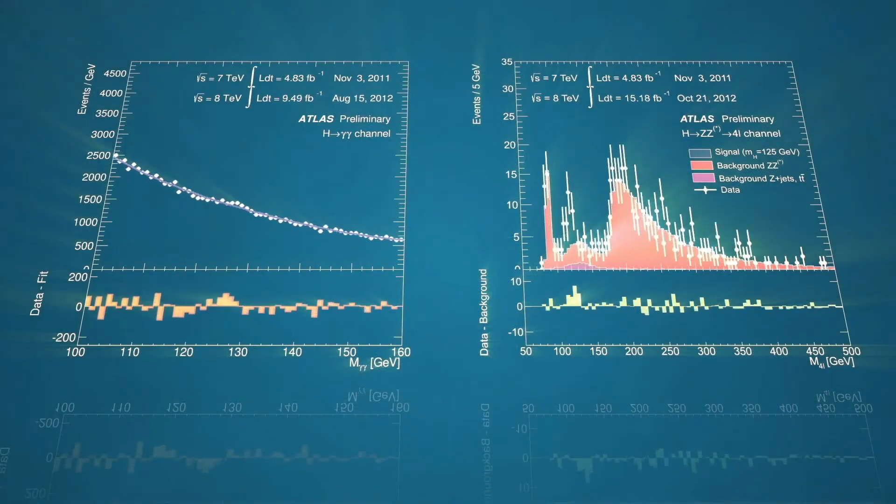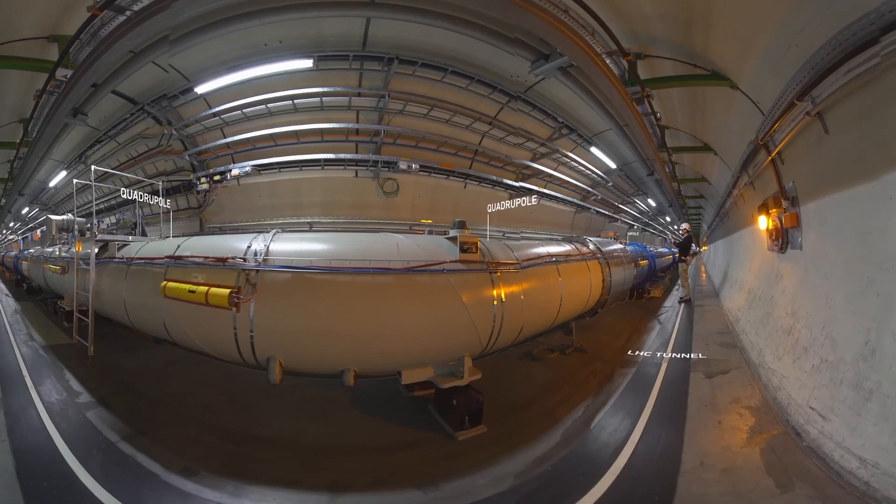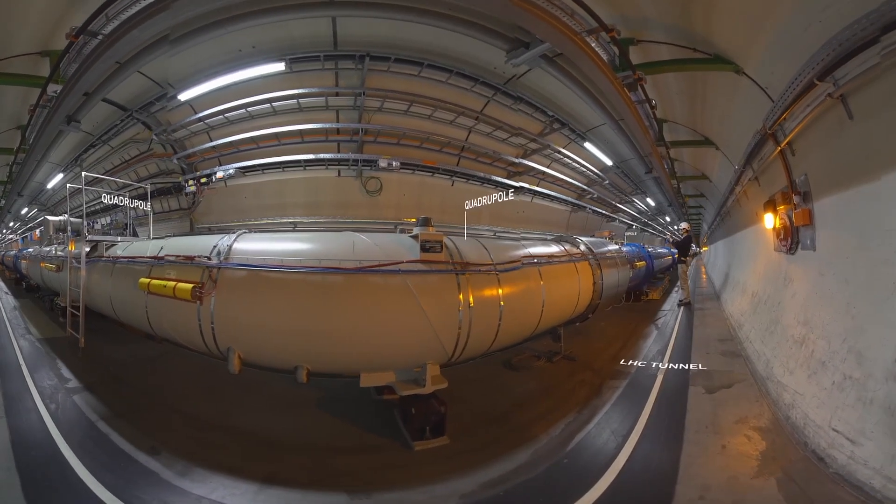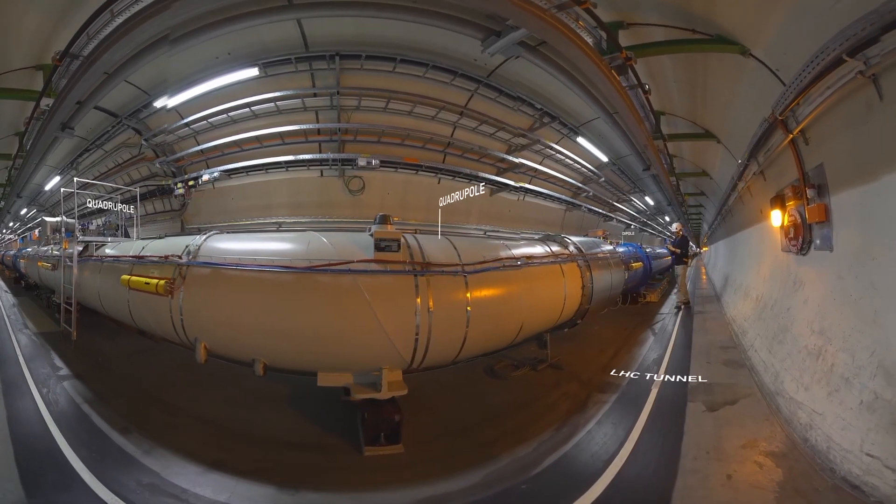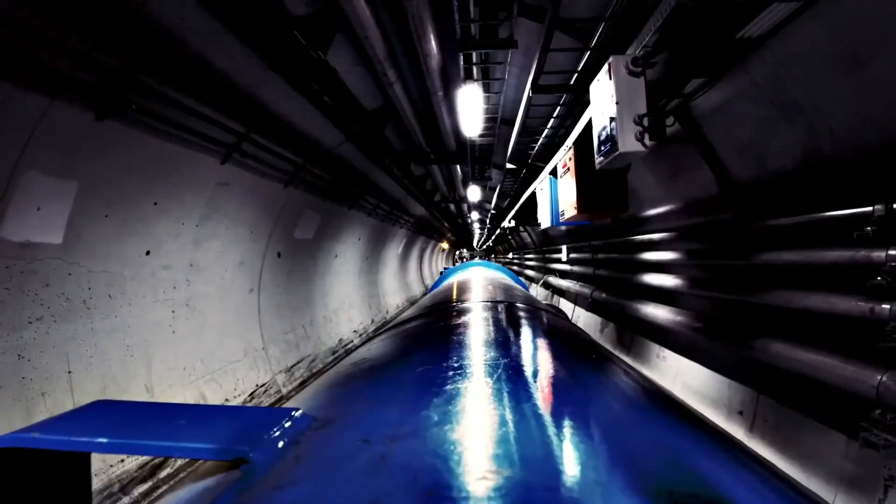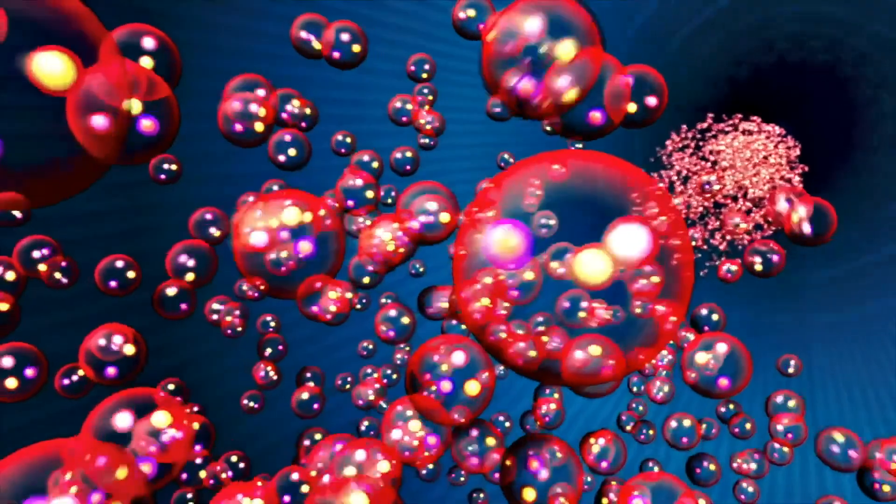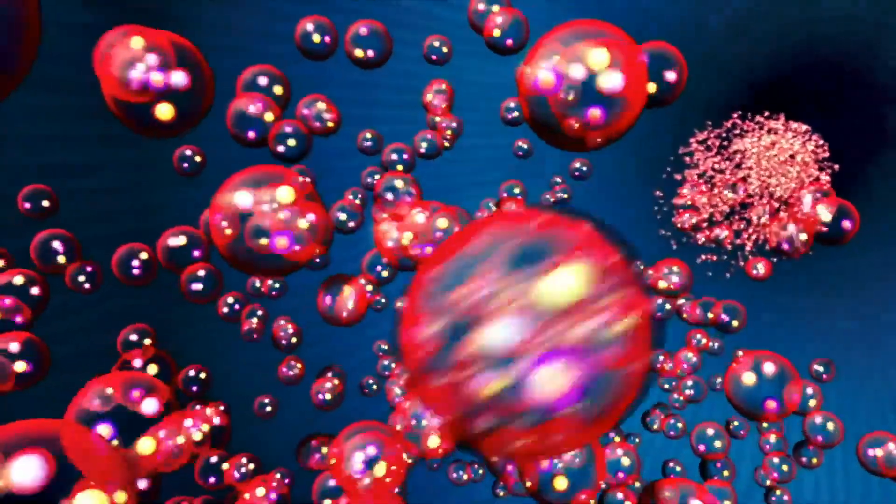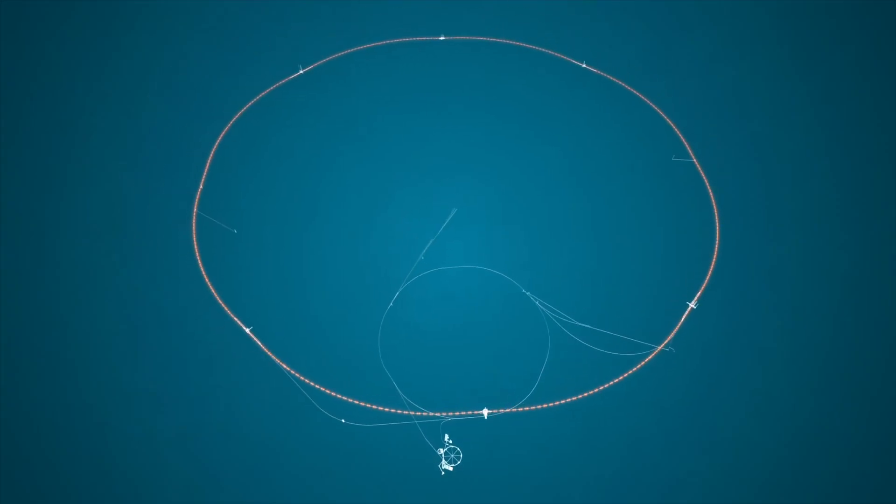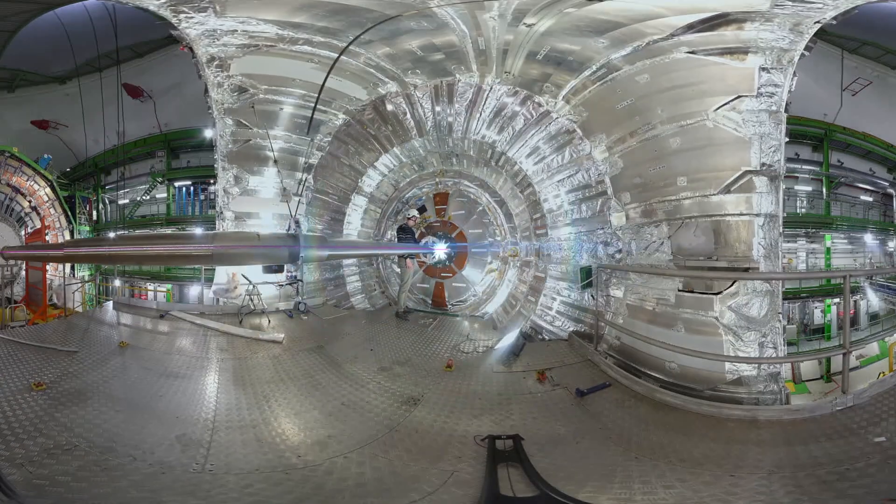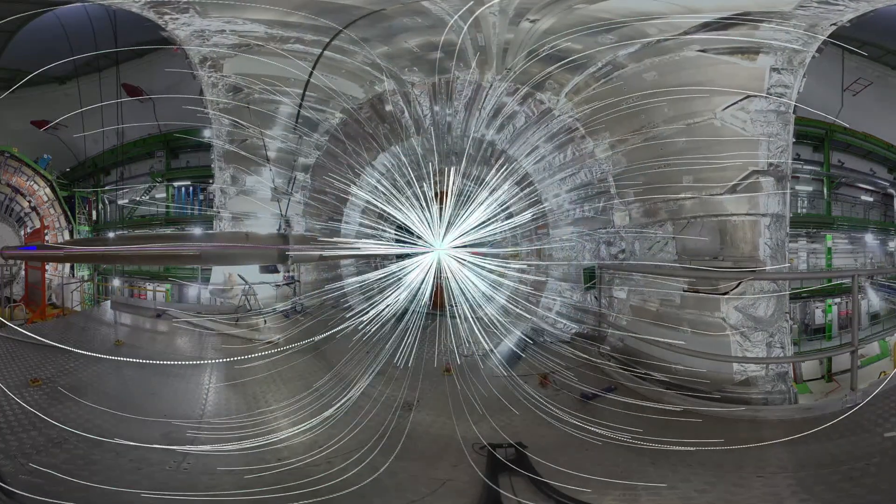This allows scientists to peer into the subatomic world and study the interactions of the particles as they come out of these collisions. Recently, while accelerating and colliding protons, a particle was released that scientists weren't exactly expecting. Protons are typically comprised of two up quarks and one down quark, but when these protons collided, a heavier strange quark was produced. Could this be the evidence of some new physics that hasn't been found before?